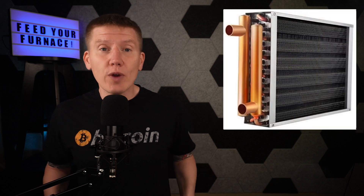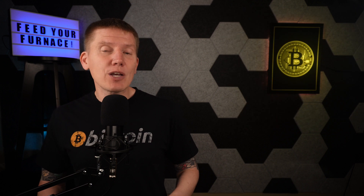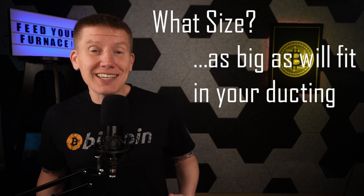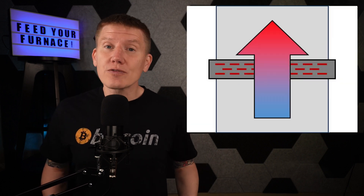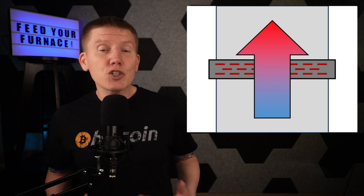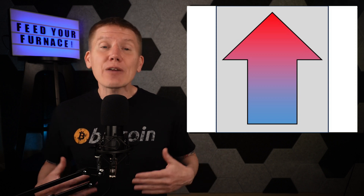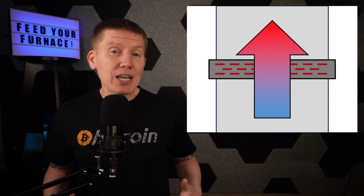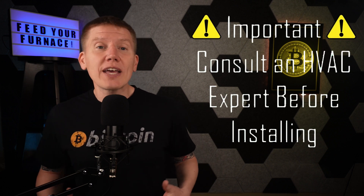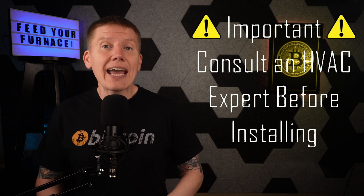Getting into the design, the first part of the system to figure out is that water-to-air radiator that goes into the hot air output of the furnace. The big question to ask is how big of a radiator should you use, and the answer is as big as you can fit into your ducting. The larger the radiator, the more heat you can transfer from your mining setup to your air, and the less restriction you'll add to your existing home heating system. When you add this radiator, you're going to be adding a restriction to your furnace airflow. This might reduce how much hot air can be delivered to certain rooms in your house, and you might have to increase your fan speed to compensate. An HVAC expert will let you know if that's possible and if there's any other downside to adding this radiator to your furnace.